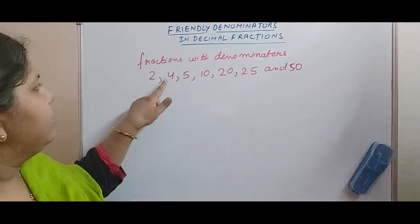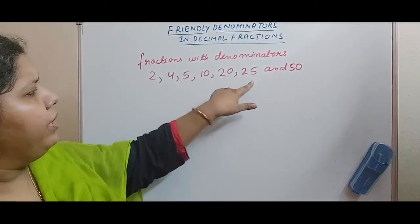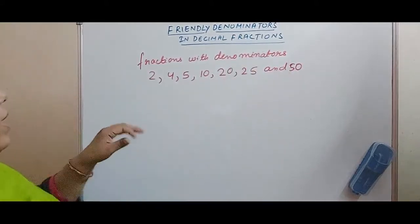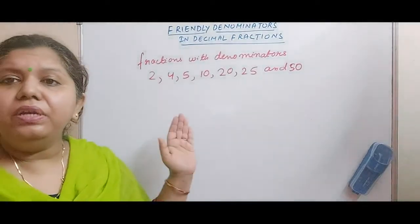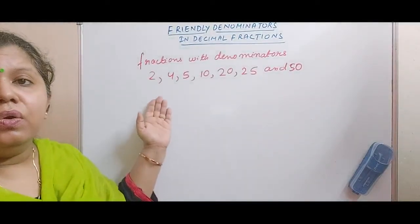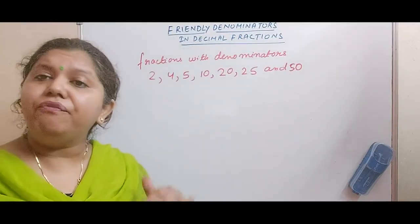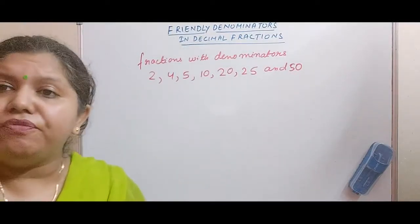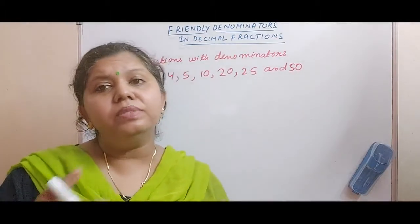Look at these: 2, 4, 5, 10, 20, 25 and 50. So these fractions which are having denominators like this, they can be easily converted into decimal fractions. And after you convert into decimal fractions, converting back to decimal numbers becomes easy.